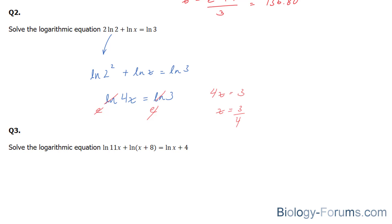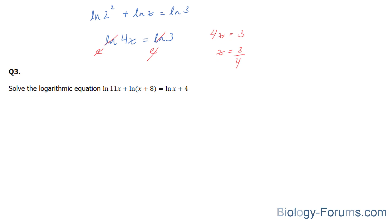Let's move on to question number 3 now. Question number 3 is the hardest of the three here. And they are expecting us to solve the logarithmic equation ln(11x) + ln(x + 8) = ln(x) + 4. Now we're going to use many of the properties of logarithms. And one of those properties is the combination of these two. Notice, ln(11x) will be a product of these two. So, 11x times (x + 8) is equal to ln(x) + 4.